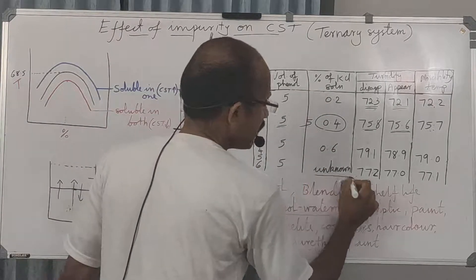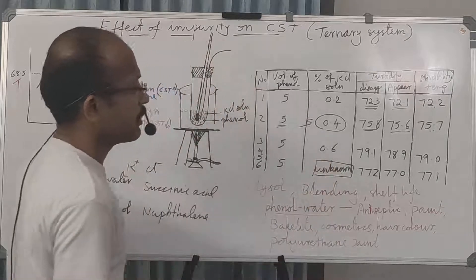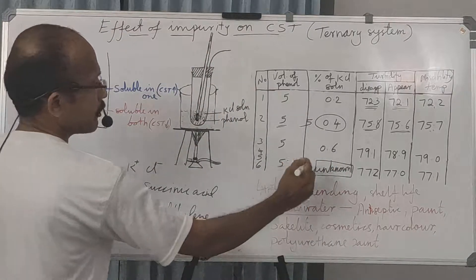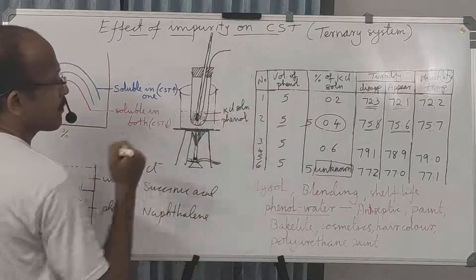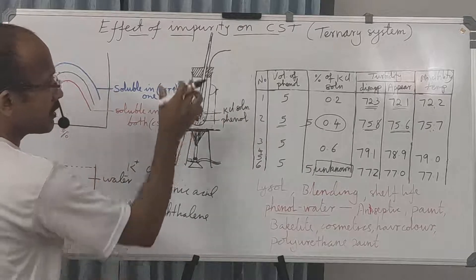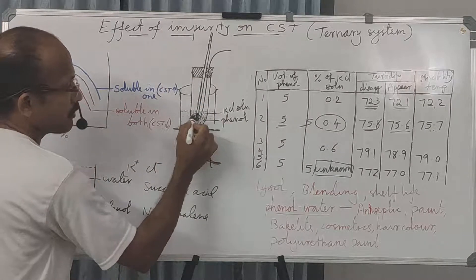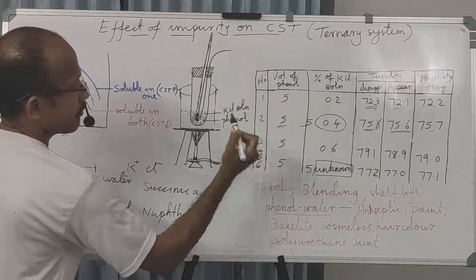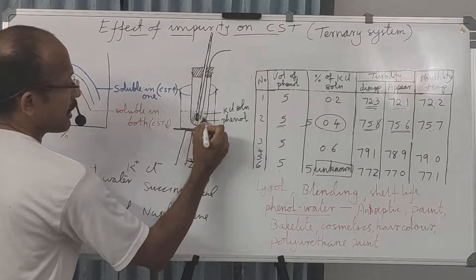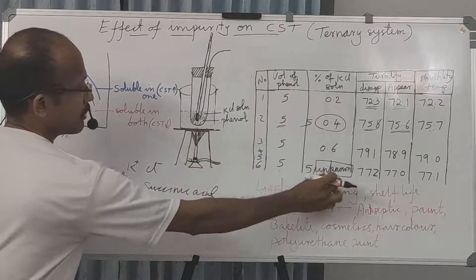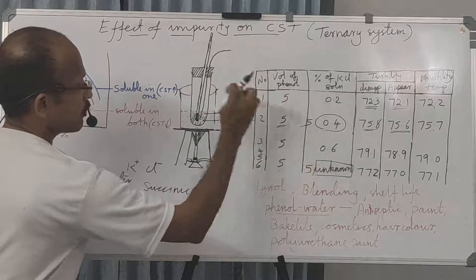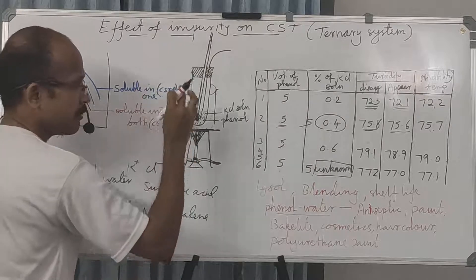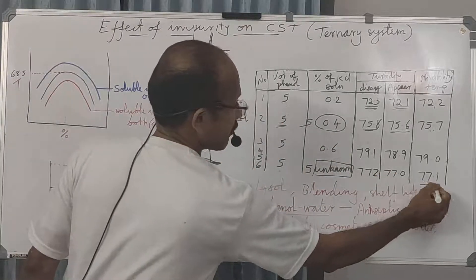Finally, we take the unknown solution given to us, introduce 5 ml into another boiling tube with 5 ml phenol, and determine its miscibility temperature the same way.